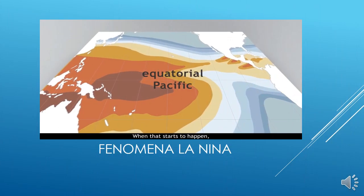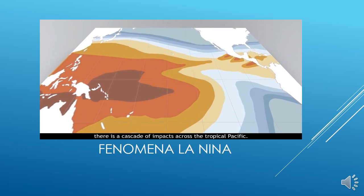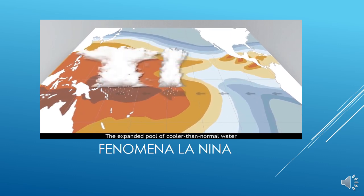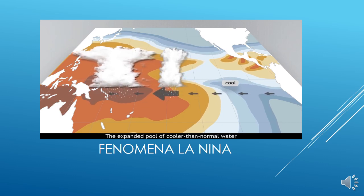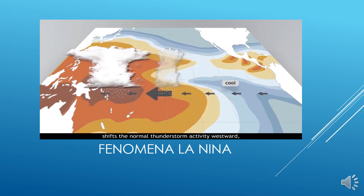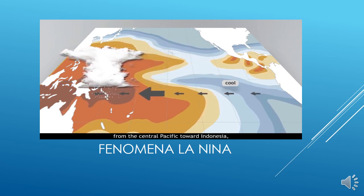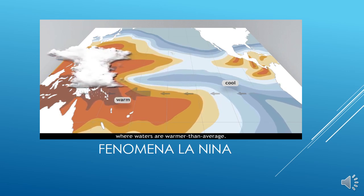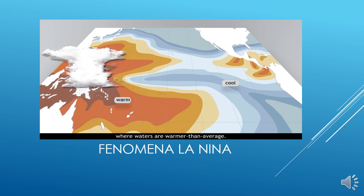When that starts to happen, there's a cascade of impacts across the tropical Pacific. The expanded pool of cooler-than-normal water shifts the normal thunderstorm activity westward, from the central Pacific toward Indonesia, where waters are warmer than average. Strong thunderstorm activity pumps heat and moisture into the upper atmosphere, disturbing global circulation patterns.